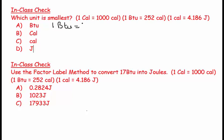Then if I look at the next one, one big calorie is equal to 1000 little calories. Well, clearly one little calorie is equal to one little calorie.